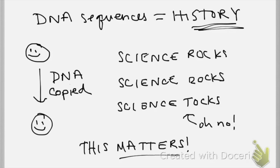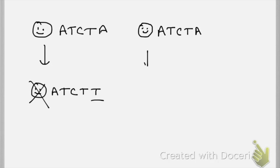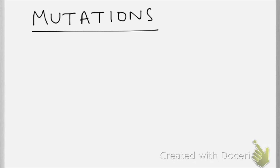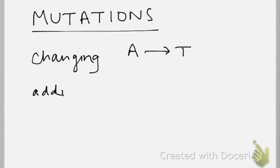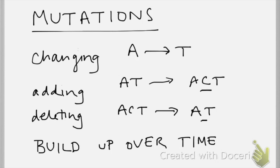Not often, but often enough to matter. Sometimes the mistakes are fatal, but other times they have relatively little effect on the offspring, so they stick around and are passed on through generations. Simple mistakes, or mutations, can involve changing, adding, or deleting a single letter in the DNA. These build up over evolutionary time, or thousands of years, to give organisms different DNA sequences.